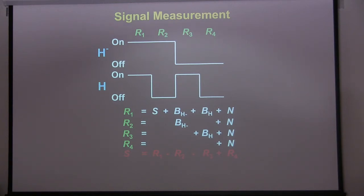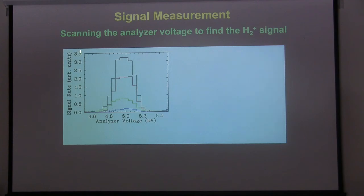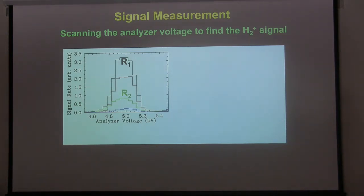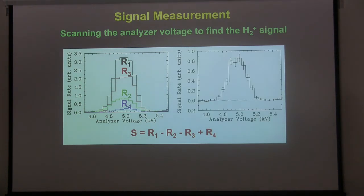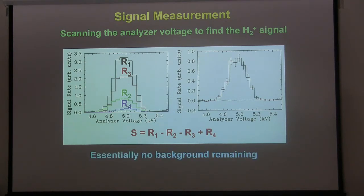This is the apparatus the day after we got first signal — you can see the team's happy reaction. The H-minus gas discharge source is behind the power control rack. We extract the beam, deflect it, and the light-tight box houses the laser. We shoot it across the ions, photo detach about 10% making a neutral H beam. The H and H-minus form H2. We deflect the H-minus out of the way. The H2 goes through the helium gas cell where it's converted to H2-plus, then electrostatically deflected onto the detector.